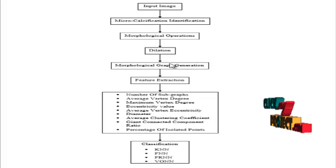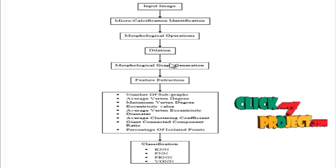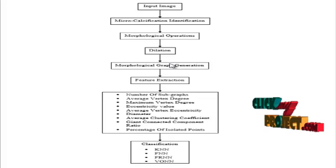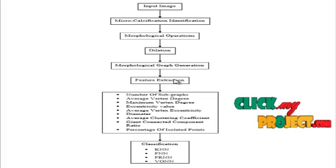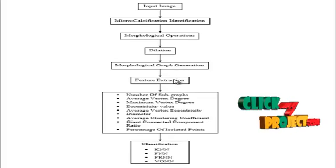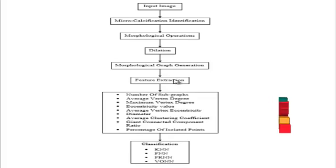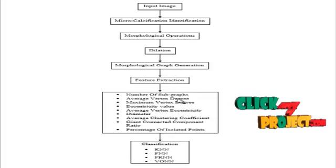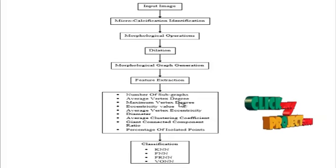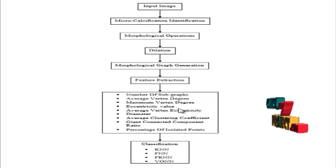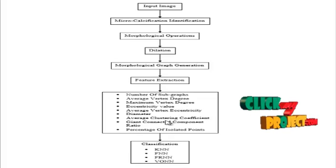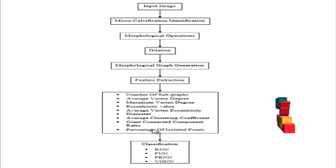This identifies the morphological graph for the input images. The graph regions were generated by combining the nodes of the input images. Features were extracted based on number of sub-graphs, average vertex degree, maximum vertex degree, reciprocity value, average vertex reciprocity, diameter, average clustering coefficient, and chain connected component ratio.